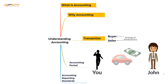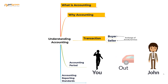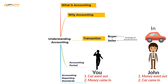Let's say you sold your car to a person named John for two thousand dollars. From your perspective, you exchanged your car for two thousand dollars. From John's perspective, he exchanged his money for your car. So there are two events happening: from our perspective, the car went out and money came in; from John's perspective, money went out and car came in.